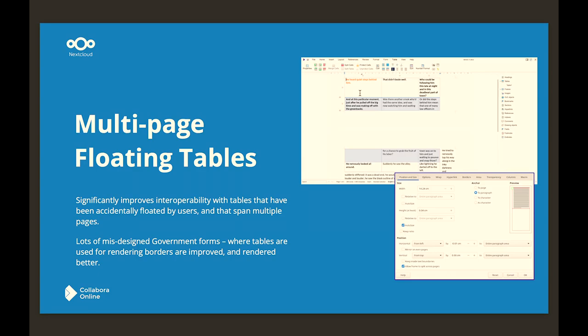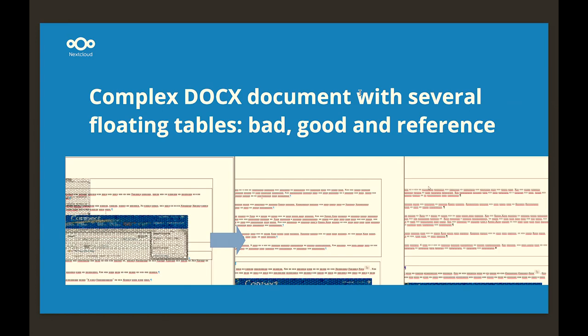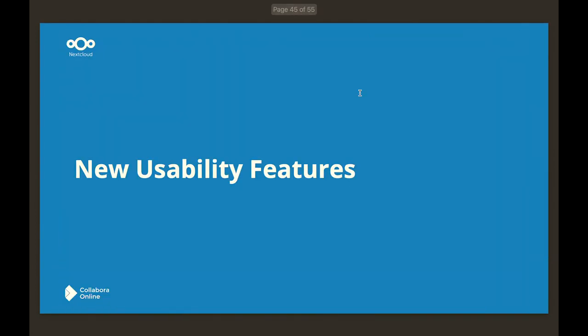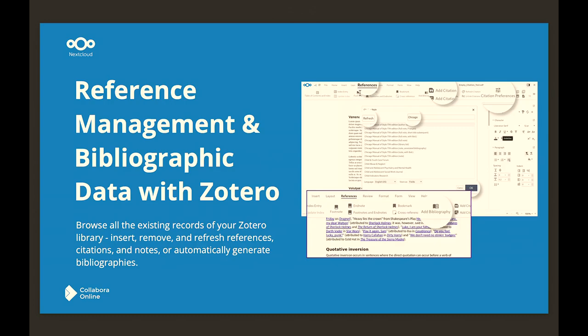This is fantastic and really good for government forms where tables are important — occasional layout issues you really don't want. Nearly done — usability features. We've been able to insert headers, footers, and page numbers for years, but new users don't know they need to insert a header and then put a field in it — it's too difficult. So we made a nice UI to do that this year. And we did Zotero integration for citations and bibliography management for universities, lawyers, and governments doing legislation.